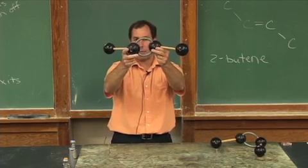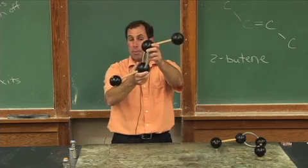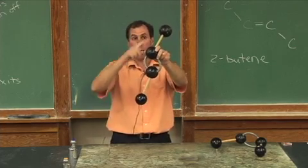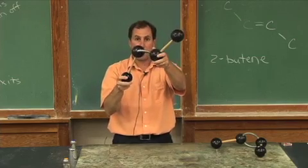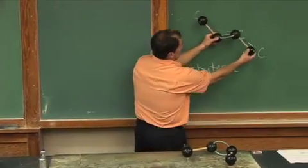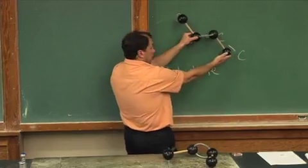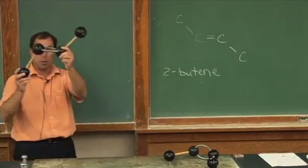There's a double bond here, so we call it butene. We do need to let people know that the double bond occurs not after the first carbon, but after the second carbon, so the name of this is 2-butene. Here's a representation up on the board. Here's the model overlapping it and the name 2-butene.